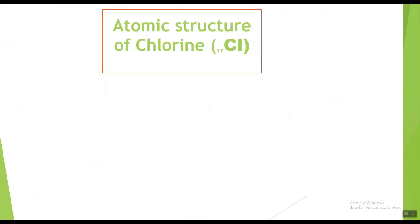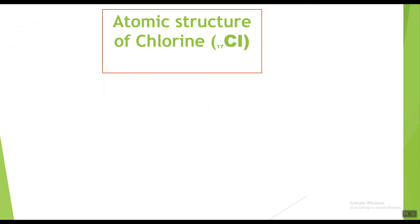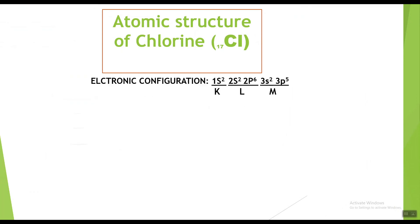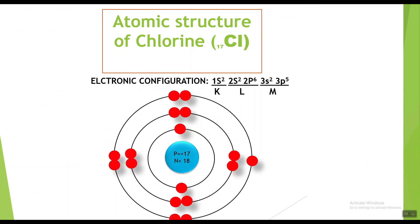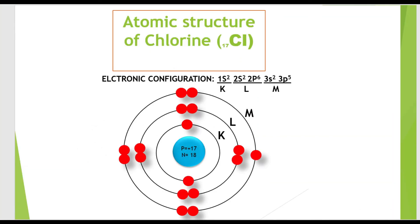Now chlorine. The symbol for chlorine is Cl with atomic number 17, showing it has seventeen electrons. The electronic configuration of chlorine is 1s2 2s2 2p6 3s2 3p5, showing two electrons in the K shell, eight electrons in the L shell, and seven electrons in the M shell. The atomic structure of chlorine shows seventeen protons and eighteen neutrons in the nucleus, with seventeen electrons around the nucleus: two in the K shell, eight in the L shell, and seven in the M shell.